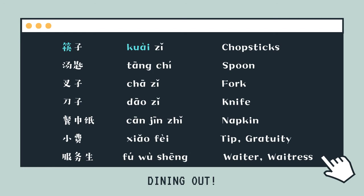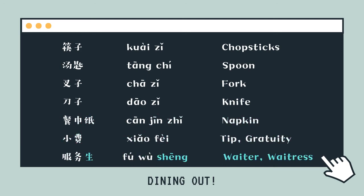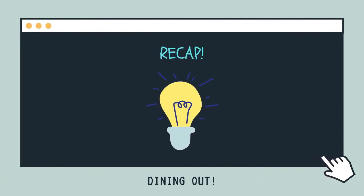筷子, 筷子. 湯匙. 叉子, 刀子. 刀子. 餐巾紙. 餐巾紙. 小費. 服務生.